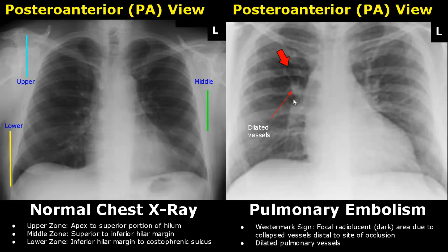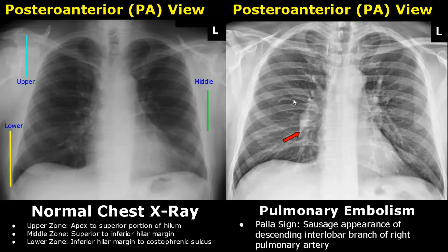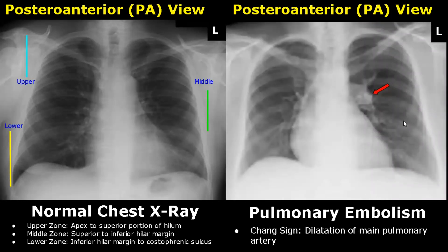The Palla sign is another feature of pulmonary embolism — the descending interlobar branch of the right pulmonary artery appears sausage-shaped, which is a distinctive feature. In the Chang sign, dilatation of the main pulmonary artery is seen. It is very bright, whereas in the normal image it is not prominent and bright.